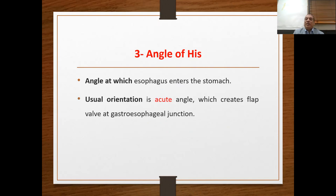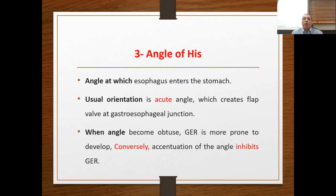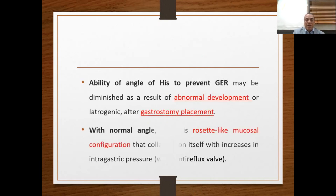Regarding the angle of His — it is the angle at which the esophagus enters the stomach. Usually it is an acute angle, creating a flap valve mechanism at the gastroesophageal junction. When this angle becomes obtuse, gastroesophageal reflux is reported; accentuation of the angle inhibits reflux. Its ability to prevent reflux may be diminished by abnormal development and most commonly after gastrostomy placement, which is an iatrogenic cause. With a normal angle, a rosette-like mucosal configuration collapses on itself with increased intragastric pressure, acting as a weak anti-reflux valve.